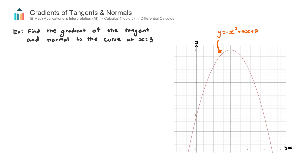This is the third of a four-part video series on differential calculus. The first video looked at what differential calculus means from a conceptual point of view — we had a curve and talked about how finding the derivative gives us the slope of the curve at any point. I recommend watching that video first, titled 'Overview of Differential Calculus.' The second video looked at how to actually find the derivative — if we're given an equation, how do we differentiate it?